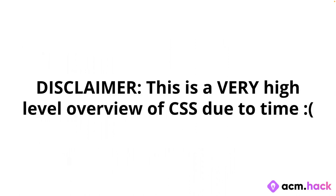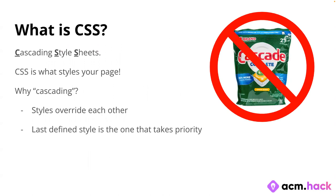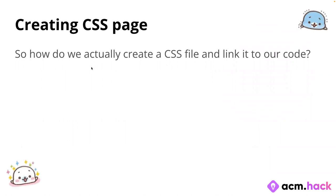A disclaimer: this is a really high-level overview of CSS due to time. At Hack School this fall we spent an entire hour and a half on CSS, and I have about 10 minutes at most. So what is CSS? CSS stands for Cascading Style Sheets — it styles your web page. The reason 'cascading' is in the name is because styles override each other, meaning the one you define last takes priority.